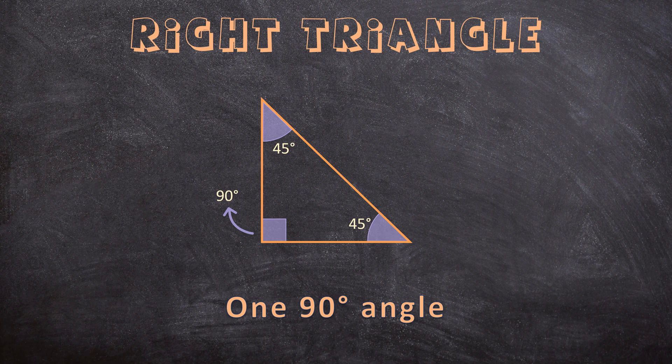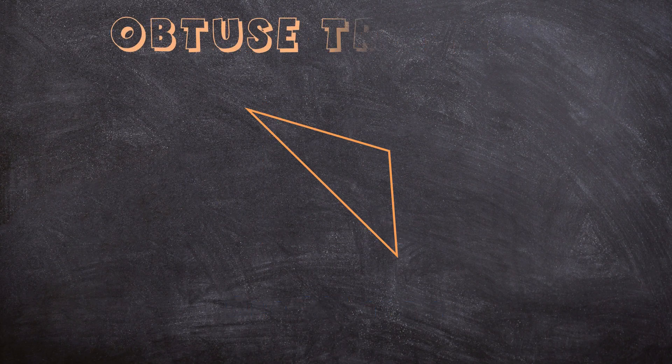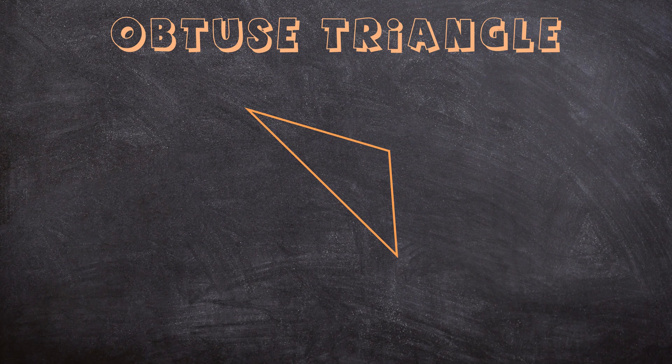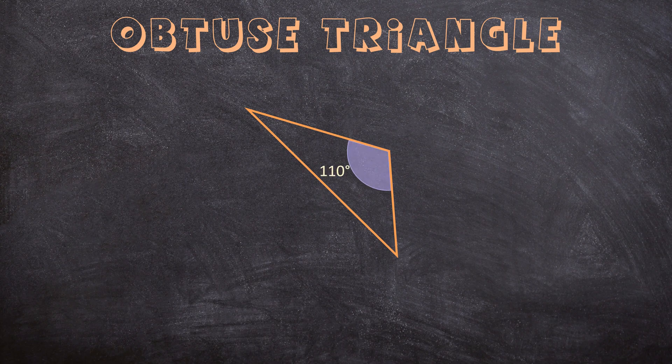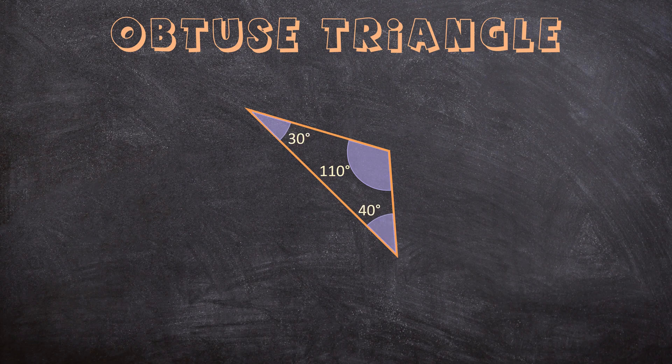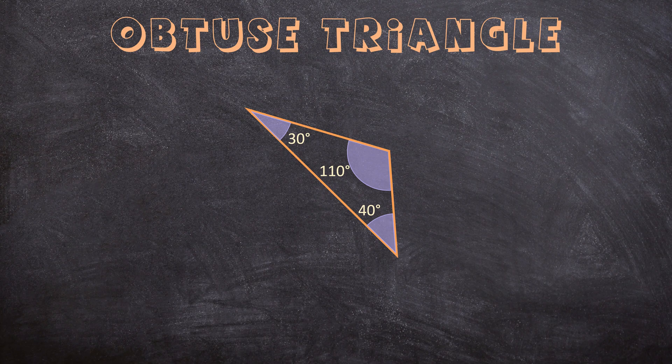Now let's look at the last triangle. This is an obtuse triangle. In an obtuse triangle, there's one angle bigger than 90 degrees. It doesn't matter how big or small the other two angles are. As long as there is one angle bigger than 90 degrees, then it's an obtuse triangle.